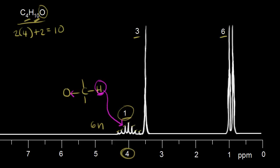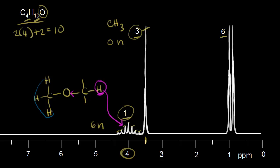Moving to the next signal — three protons, so a methyl group. There's only one peak, so one minus one equals zero neighboring protons. The chemical shift is about 3.5 parts per million, indicating these methyl protons are close to the oxygen. So we place the methyl group on the left side of the oxygen. That makes sense for both the chemical shift and the zero neighbors.